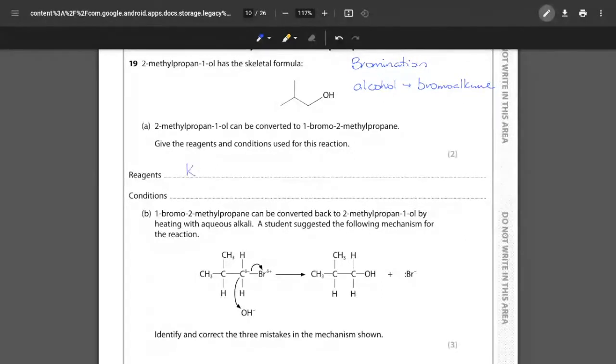What reagents and conditions does that require? We are going to require a source of the bromine which is potassium bromide, and that also requires 50% concentrated sulfuric acid to act as a catalyst. For the conditions, in particular for the bromination, it requires reflux using the Liebig condenser, and any time that we have reflux we must also heat the substance. One mark for your reagents, one mark for your conditions.